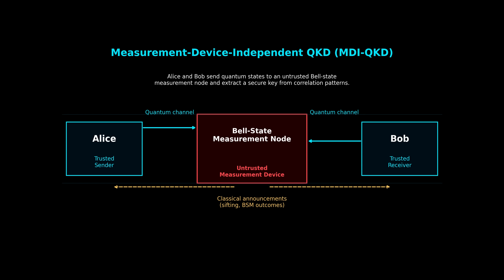Once the Bell State measurement is performed — whether honestly or maliciously — the node generates classical outcomes. Those results are then broadcast publicly over the classical communication channel shown by the dashed gold line. These classical announcements include which detection events occurred, which Bell State was measured, and which time slots were successful. Alice and Bob use that publicly announced information, along with their private encoding choices, to identify the rounds where their photons were successfully correlated. Those correlated rounds form the raw key. After sifting, error correction, and privacy amplification, they end up with a secure shared key, even though the measurement device itself was never trusted. This structure — two quantum channels into a central untrusted measurement node combined with classical announcements — is the defining feature of MDI-QKD.